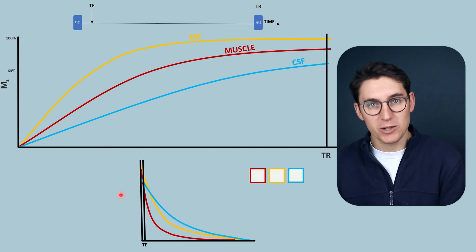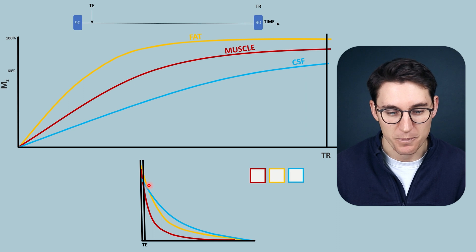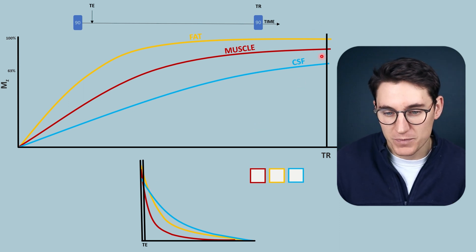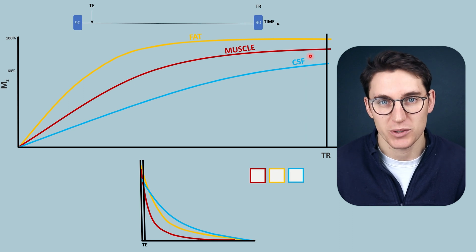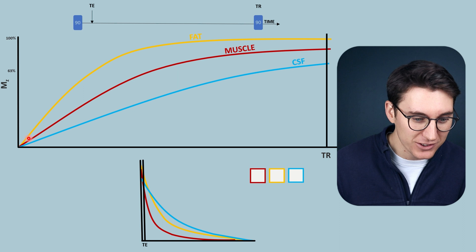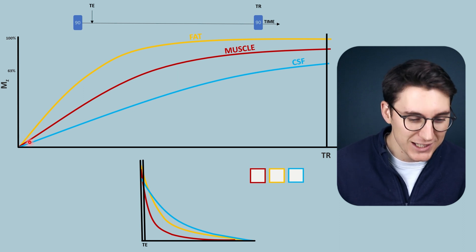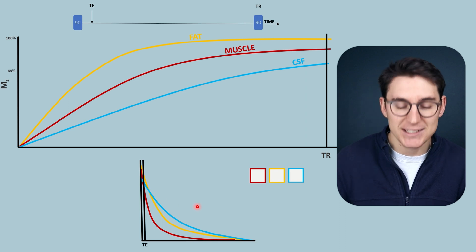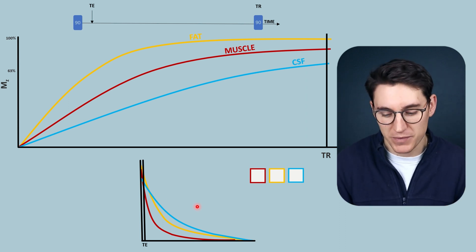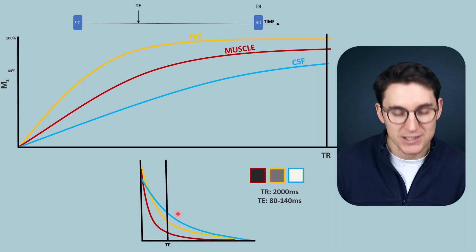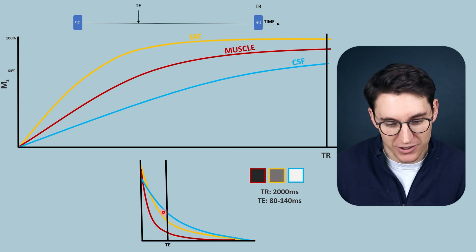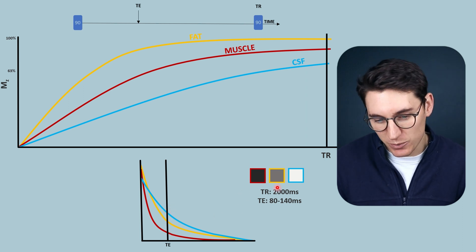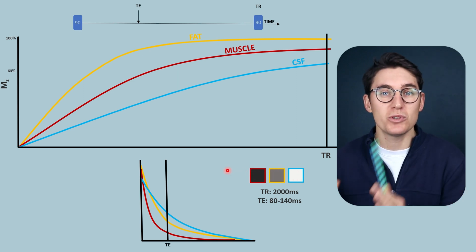Moving to T2 weighted imaging: we want to keep the TR long — giving high signal and very little T1 difference between tissues. We cannot use very low TR values as that gives extremely low signal. With a long TR, we then increase the TE time to highlight the T2 differences — transverse decay within the various tissues. T2 relaxation happens much slower in water than in fat or muscle, creating a different pattern of contrast based on T2 differences.